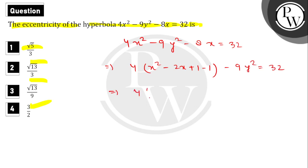This implies 4(x-1)² - 4, and -9y² = 32. Taking 4 to the right side, we get 4(x-1)² - 9y² = 32 + 4, which equals 36.